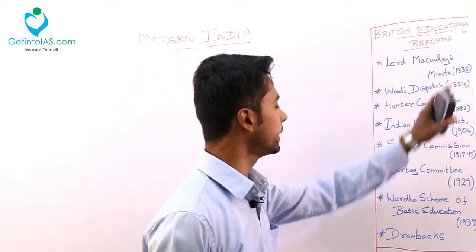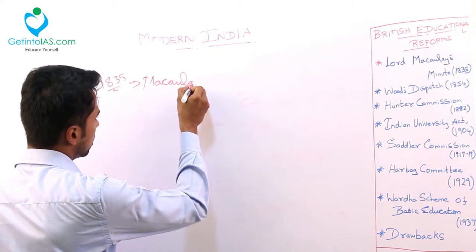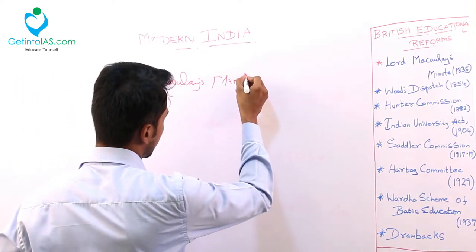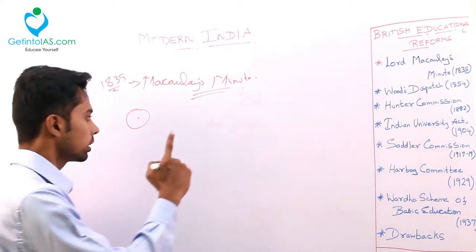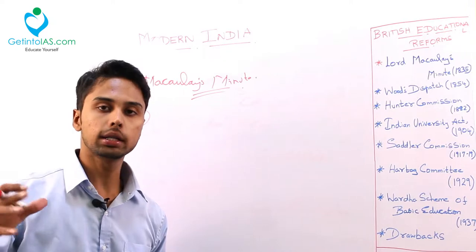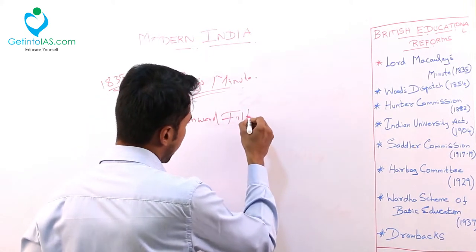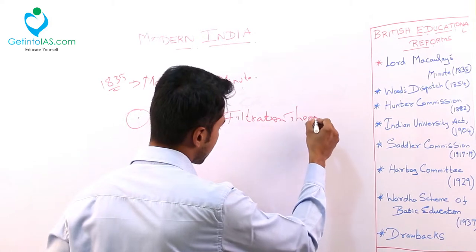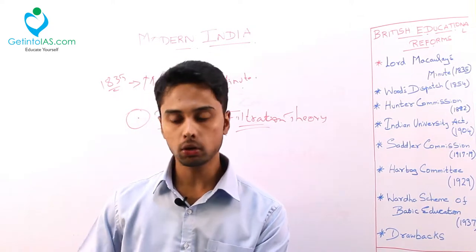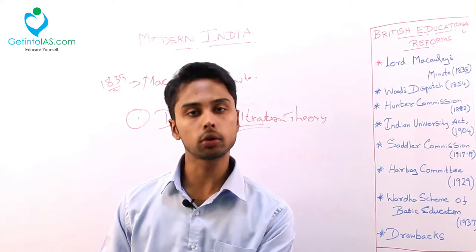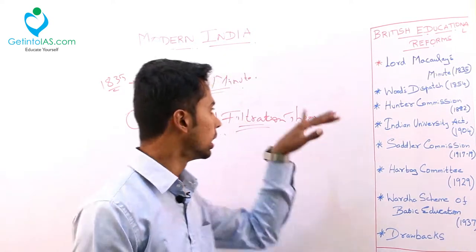By the year 1835, a notification was done by Macaulay, famously called the Macaulay Minute. He broke those two thoughts. On the first thought - whether to educate the full Indian mass or only the upper middle class - he gave something called the Downward Filtration Theory. This is nothing but educating only the upper middle class, filtering out the lower sections. He told that the upper middle class is only responsible for promoting education downward.